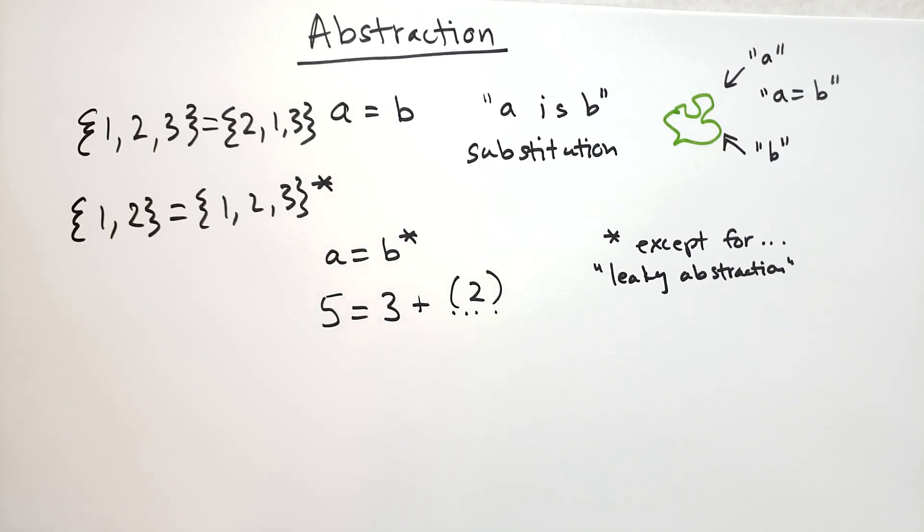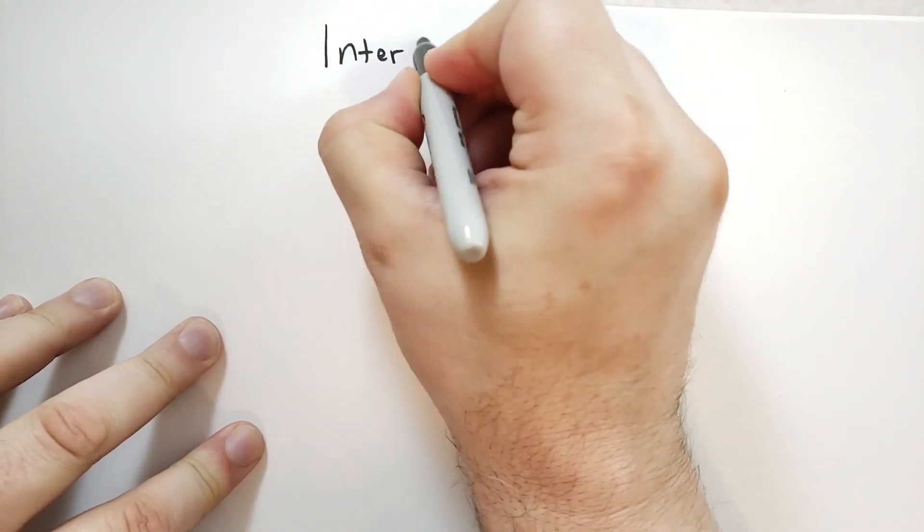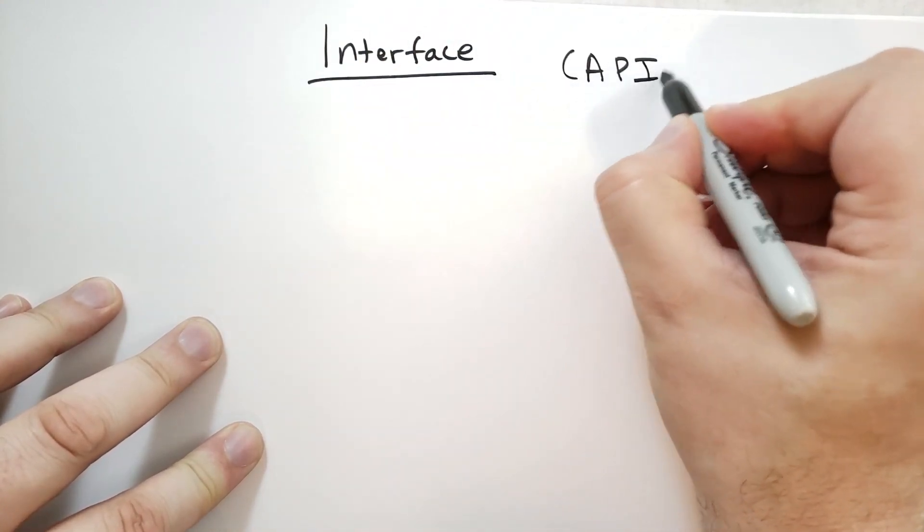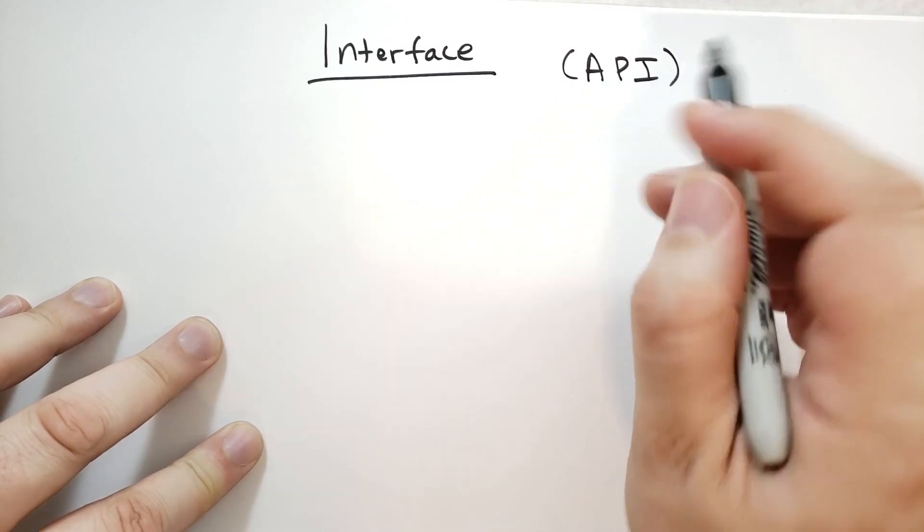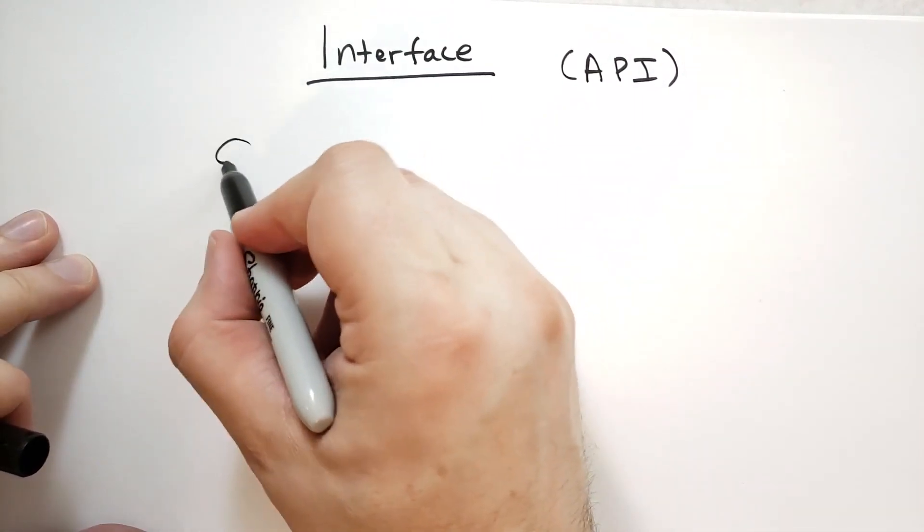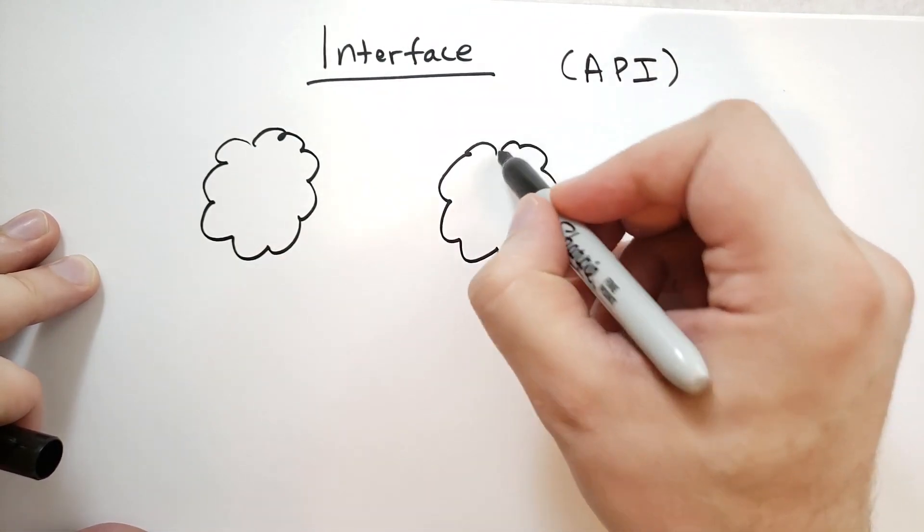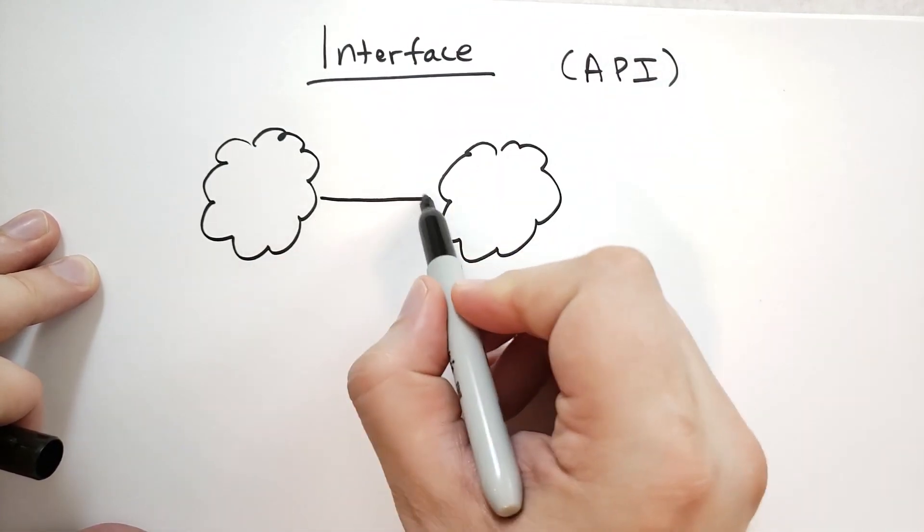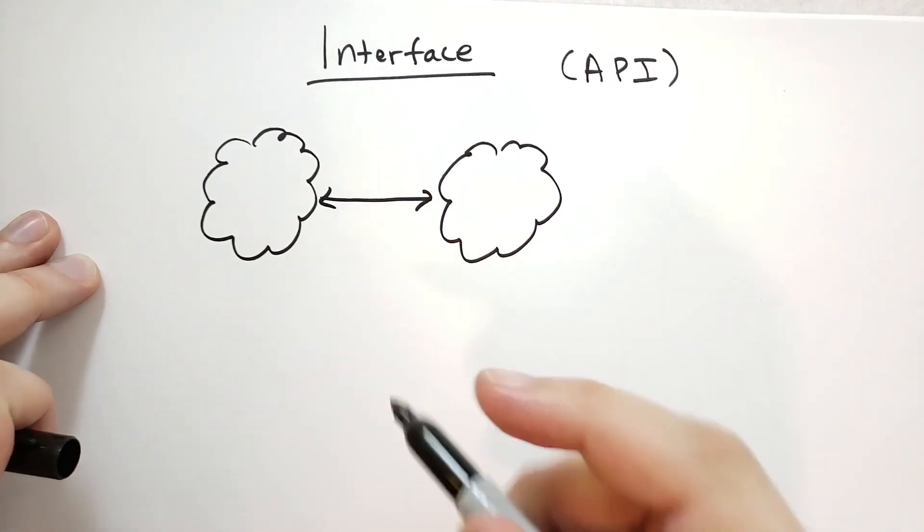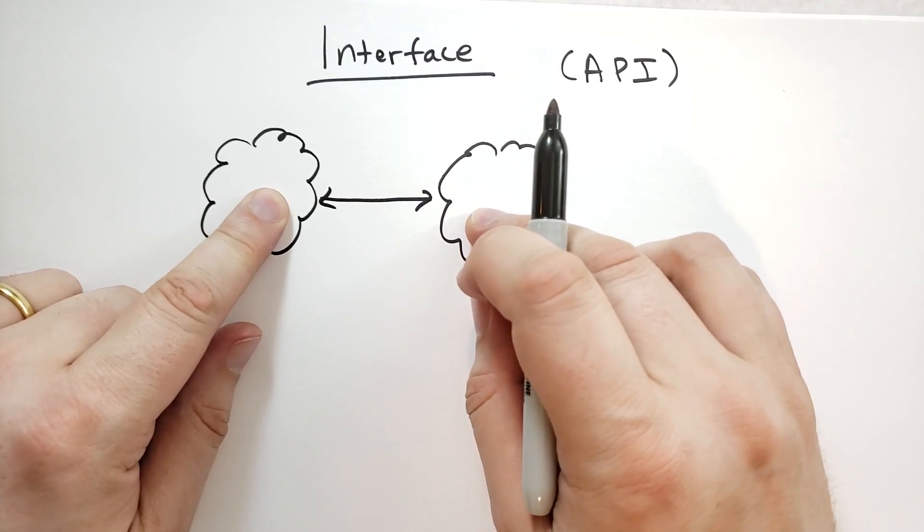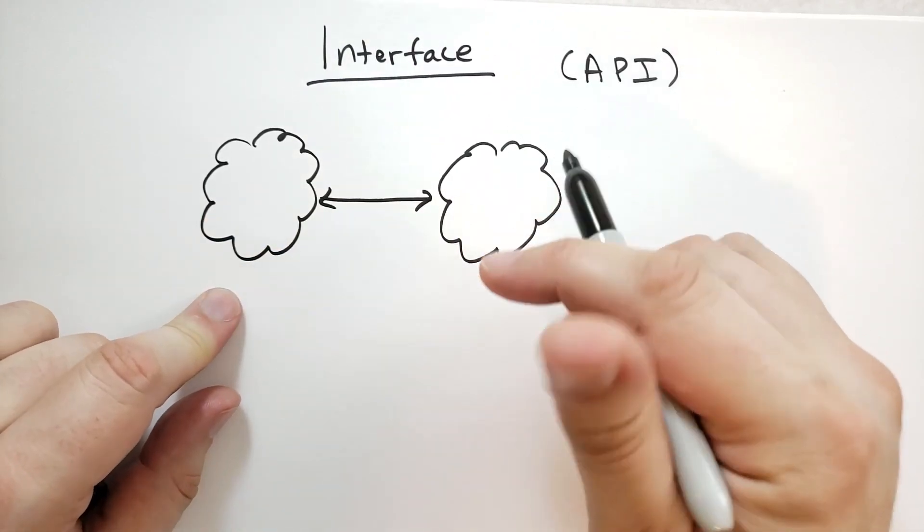Let's talk a little bit about interface. This is something you'll see a lot. Typically, you'll have API, Application Programming Interface. What is an interface? Well, if you have something over here, and you have something over here, and they're supposed to combine somehow. Then the interface is the elements of these two things that are relevant for how they combine.